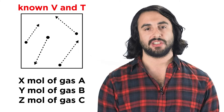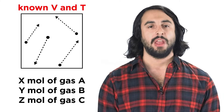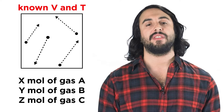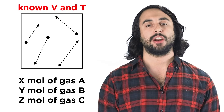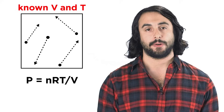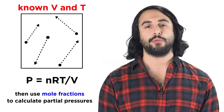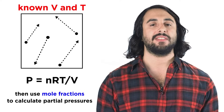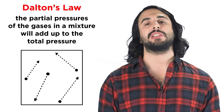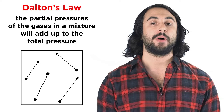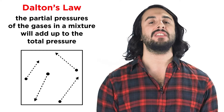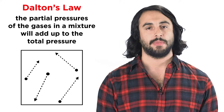We can do trickier calculations as well, by including other gas laws. Let's say we have quantities in moles of a few different gases, and we place them into a vessel of known volume and at a known temperature. We could then use the ideal gas law to solve for the total pressure, and then if we calculate the mole fraction of each gas, we could combine this information to find the partial pressure of each gas. So Dalton's law is quite intuitive when you think about it, but it allows us to do important calculations regarding the partial pressures of individual gases within a mixture.